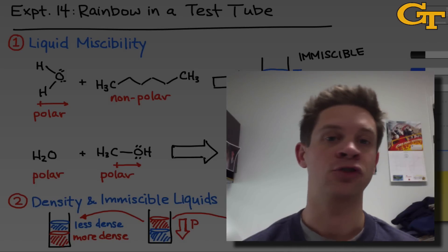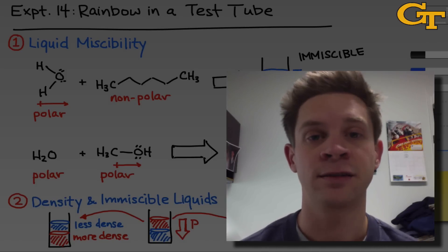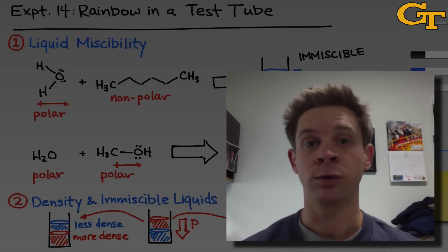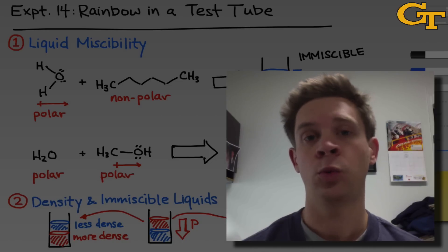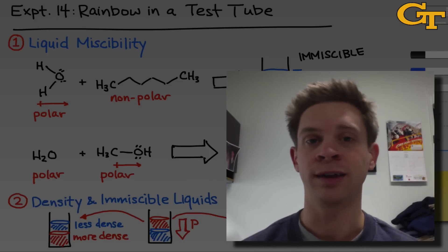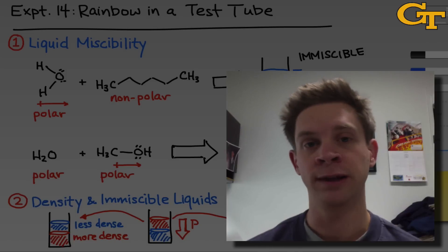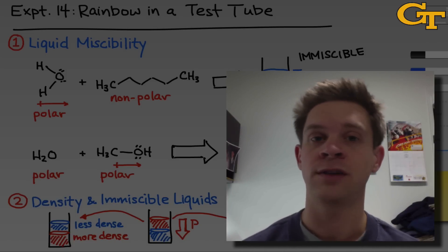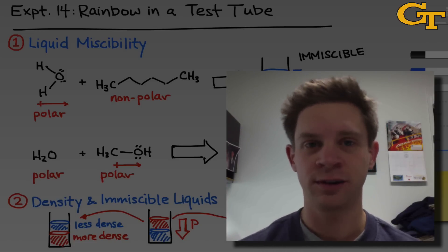Putting the information together from the miscibility and relative density tests, we'll be able to figure out which liquids will sit on the bottom and which liquids won't mix with one another when they're layered. We'll then be able to carefully layer the immiscible liquids from most dense to least dense, one on top of the other, forming a colored chemical rainbow.